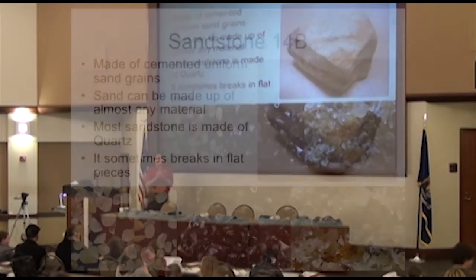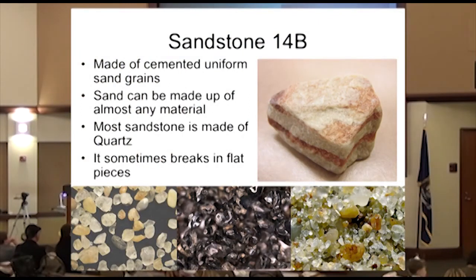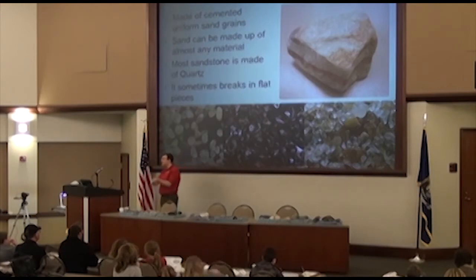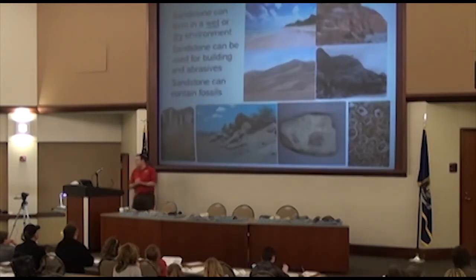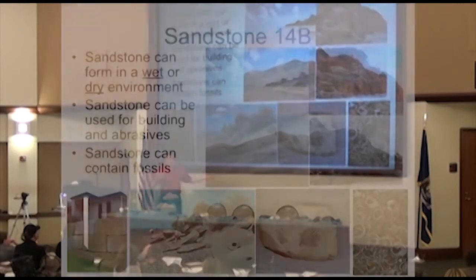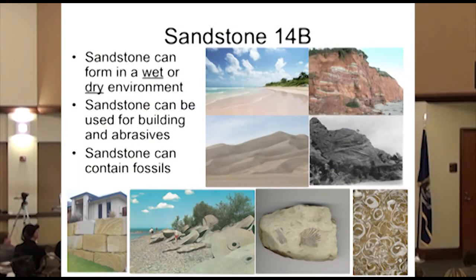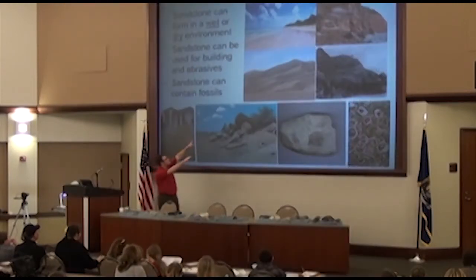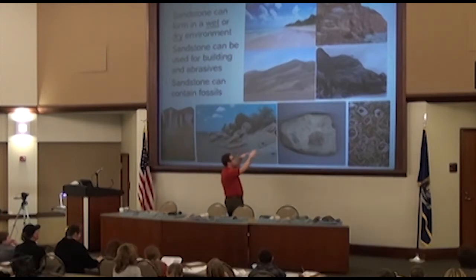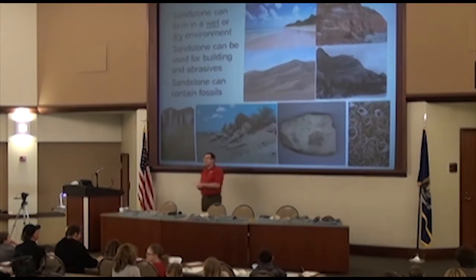Sandstone can actually be made out of a number of different minerals, but for the most part we're going to focus on quartz. Most of the time, sandstone is made out of quartz grains. Quartz is very weather-resistant and very common, so there are lots of areas that have almost all quartz grains of sand. Sandstone can form in both a wet or a dry environment — we see sand at the beach in a wet environment and sand in the desert in a dry one. The way the lines inside the sandstone are laid together tells you whether it was wet or dry.